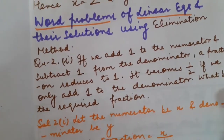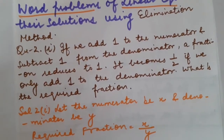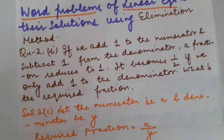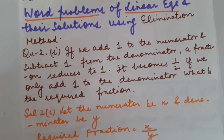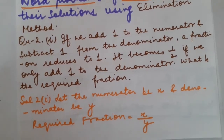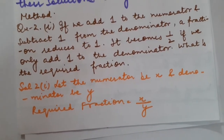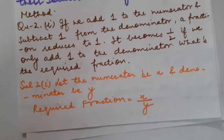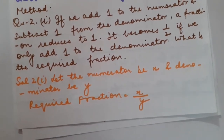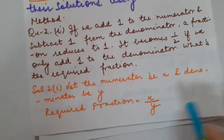Let us switch to question number 2, first part, related to word problems. If we add 1 to the numerator and subtract 1 from the denominator, a fraction reduces to 1. And if only 1 is added to the denominator — with no change in the numerator — the fraction becomes half. Find the required fraction. As we are dealing with a fraction, let the numerator be x and the denominator be y. So the required fraction is x upon y.